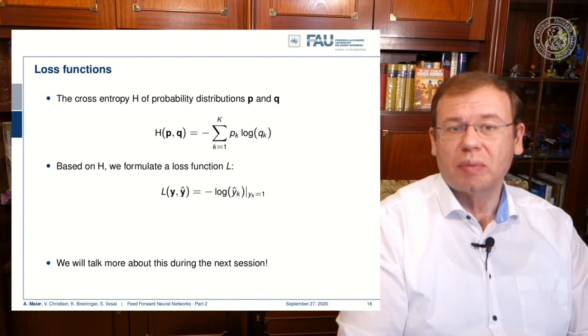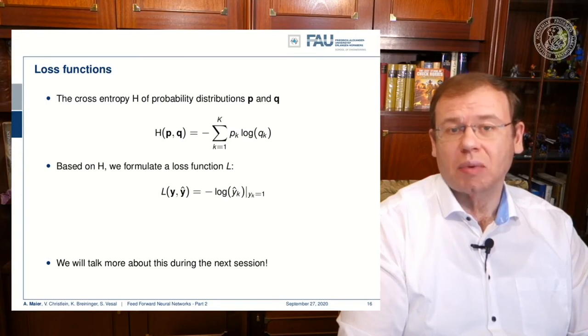So we only have to determine the negative logarithm of y hat subscript k where k is the true class. This simplifies the computation a lot and we get rid of above sum. By the way, this has a couple of more interesting interpretations and we will talk about this in the next couple of videos.